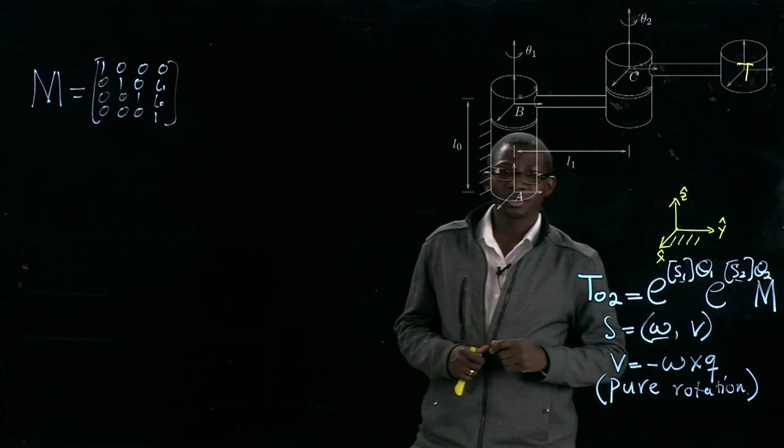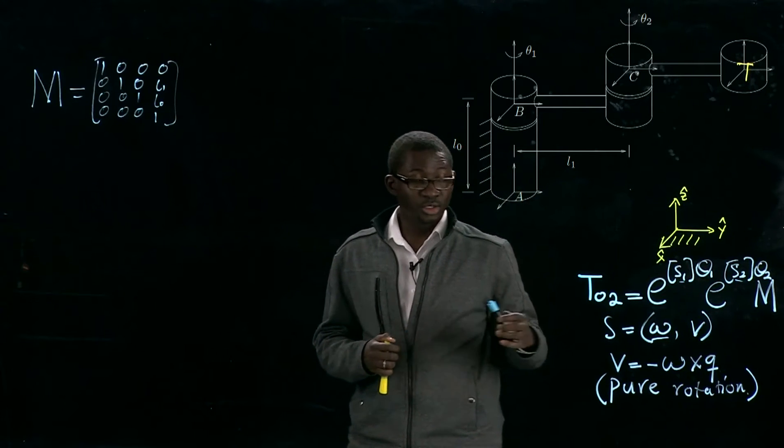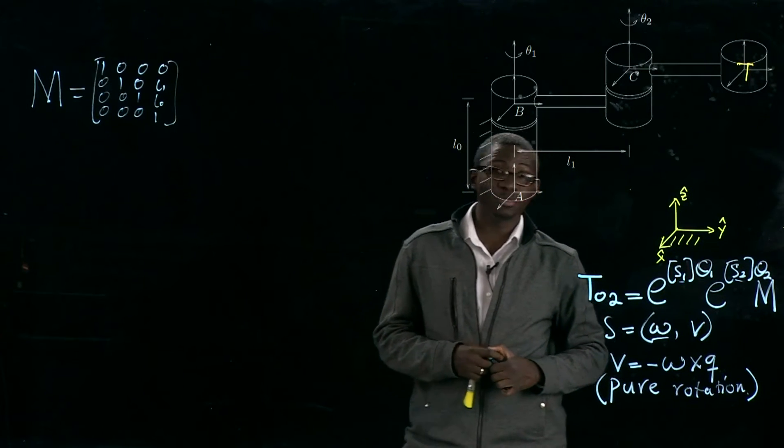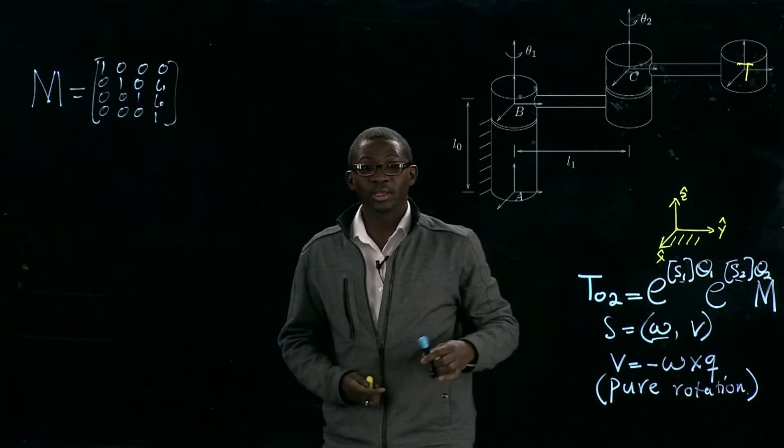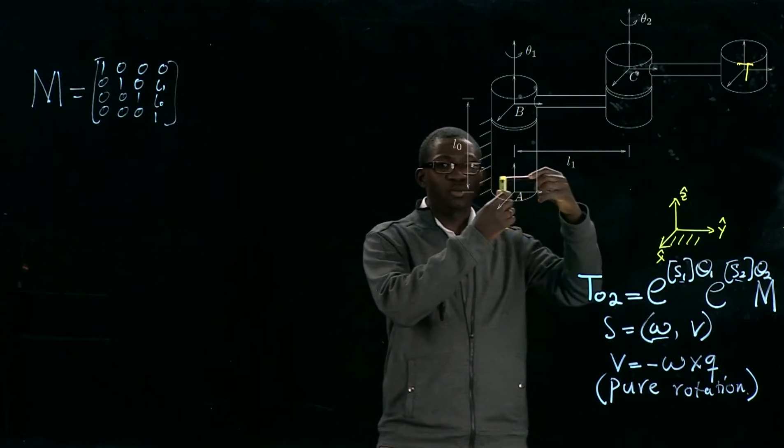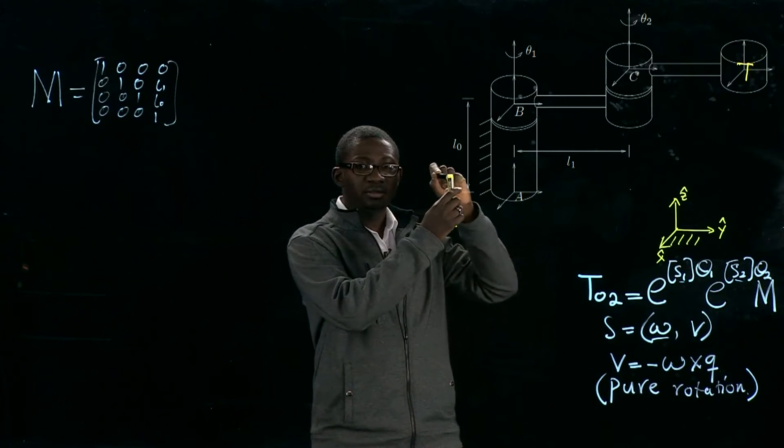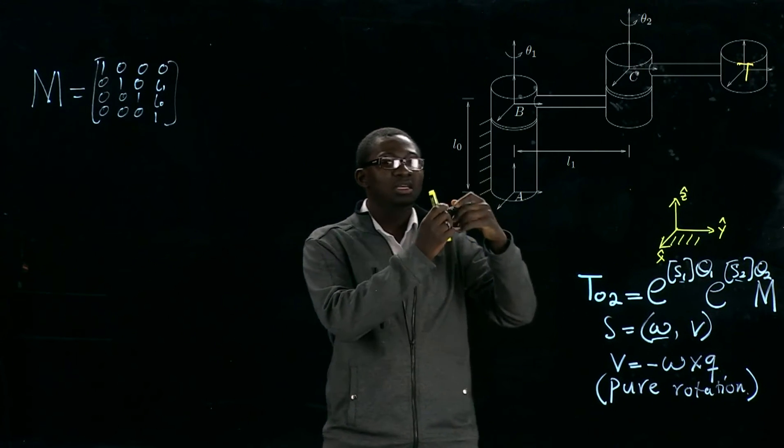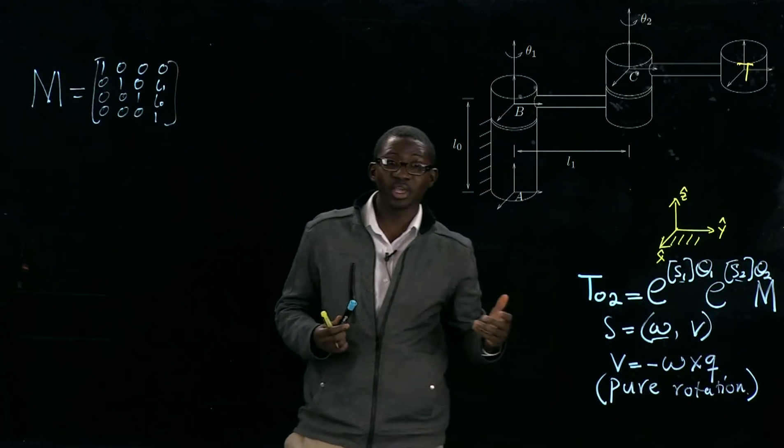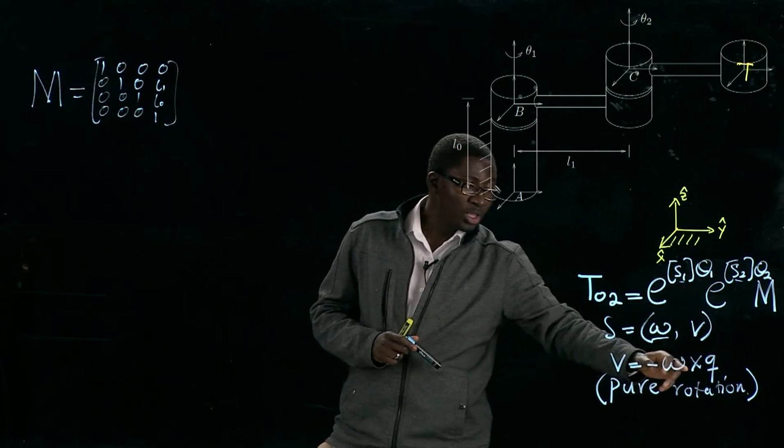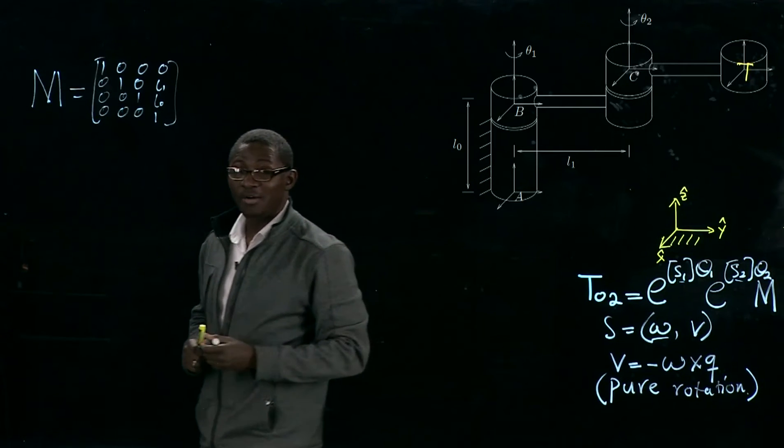We know the linear velocity formula when our joint is a revolute joint, meaning that the robot is going to rotate along, in this case, the positive z-axis. So we are not going to have a pitch, so we can use this formula for our velocity.